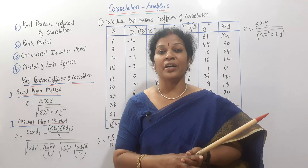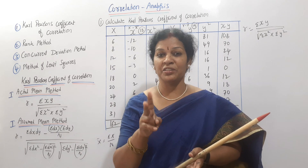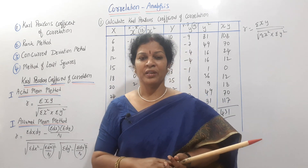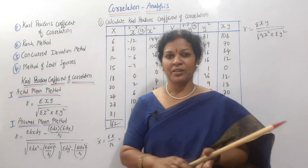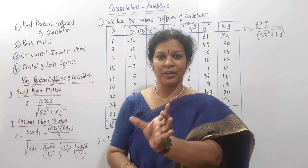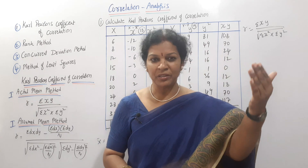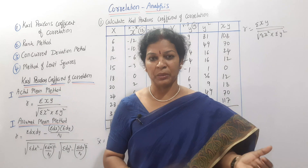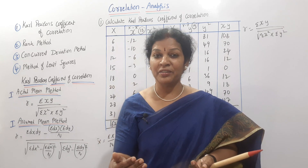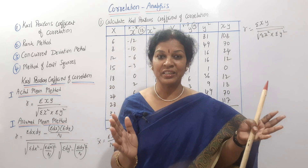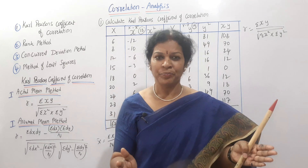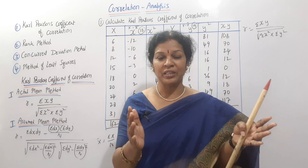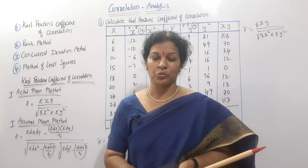We use correlation for two variations — to understand how much correlation exists between two areas. For example, husband's age and wife's age. We will compare them and discuss the correlation between those two related variables.